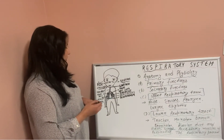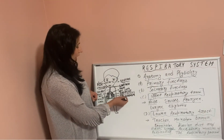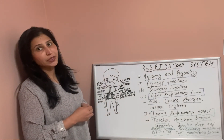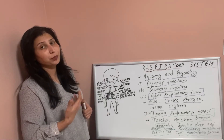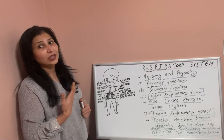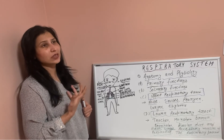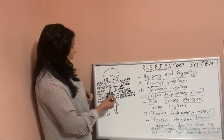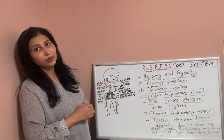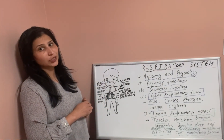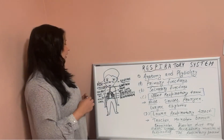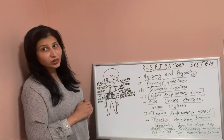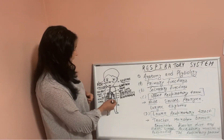The bronchi contain cilia that help in expectoration of products like sputum or saliva, which pass out through the oral cavity or can be swallowed. The bronchi are further divided into bronchioles.